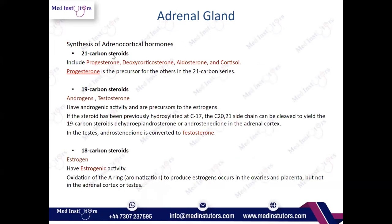Now you can understand the importance of carbon numbers. Your job is to remember which hormones consist of 21 carbons, which have 19 carbons, and which have 18 carbons. The 21-carbon steroids are progesterone, deoxycorticosterone, aldosterone, and cortisol. These are adrenal hormones with 21 carbon numbers in their structure.